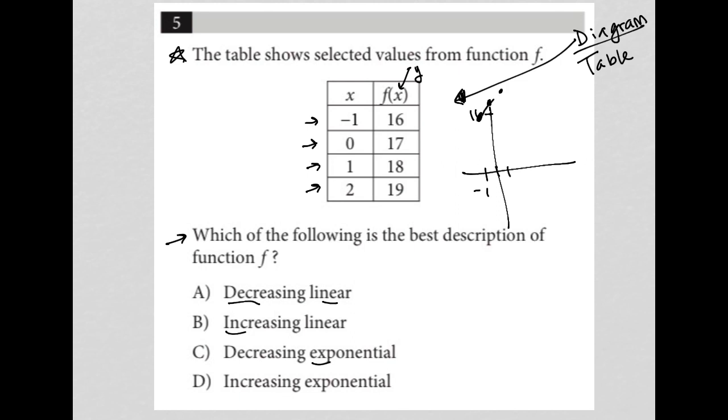So far, I can already tell this is increasing. So any answer choice that says decreasing, I'm going to cross out. So A is gone and C is gone. This is definitely increasing. If I continued on, 2 is at 19, so it goes even higher. So there's my line. It's definitely increasing.